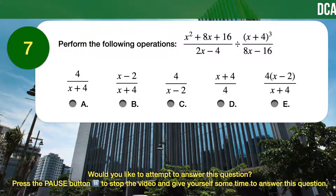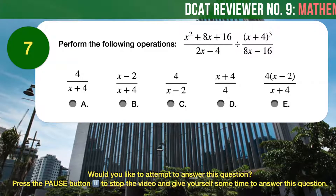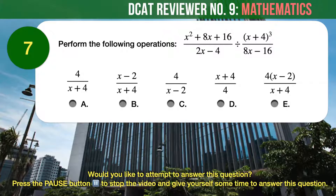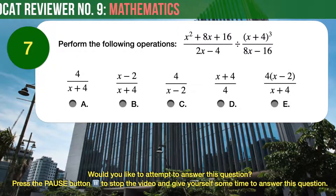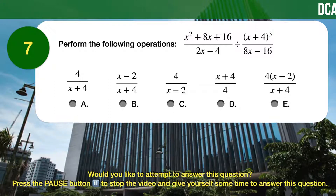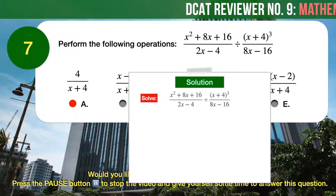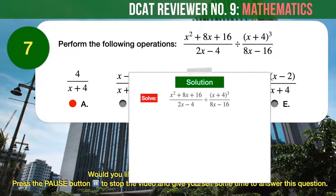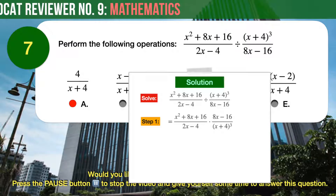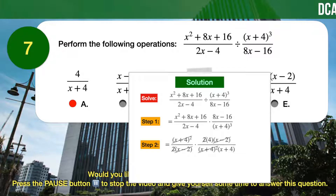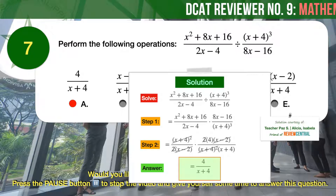Question number 7: Perform the following operations as shown. The correct answer is A: 4 divided by the quantity x plus 4. This involves division of polynomials and fractions. Step 1: switch the numerator and denominator of the divisor and change the operation from division to multiplication. Step 2: simplify all factorable expressions and cancel out similar terms to arrive at 4 over the quantity x plus 4.